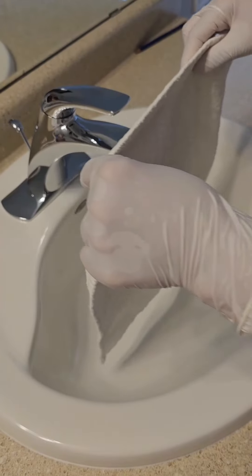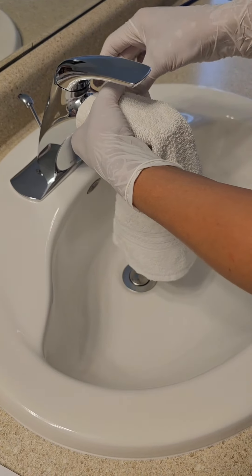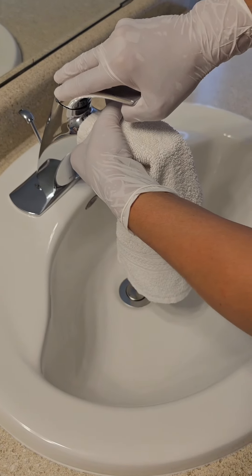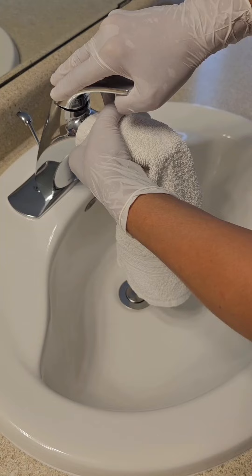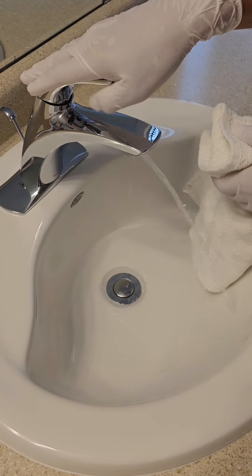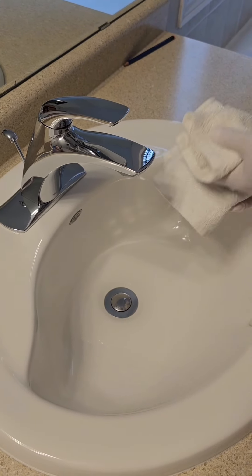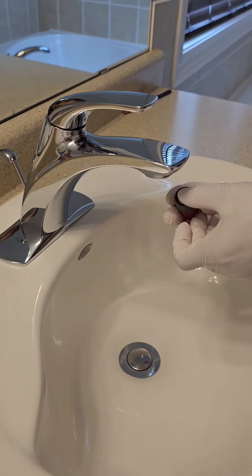Before running any water, put a paper towel in the cabinet to easily see any leaks. To minimize splashing, open the faucet halfway and put a towel over it. Let it run for a few minutes then reinstall the aerator.